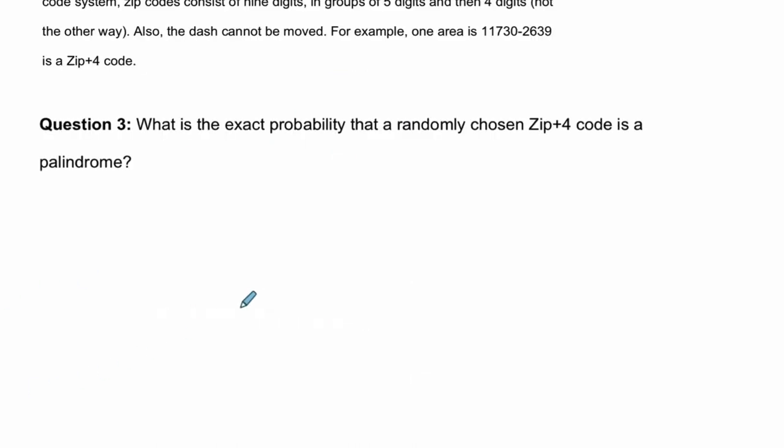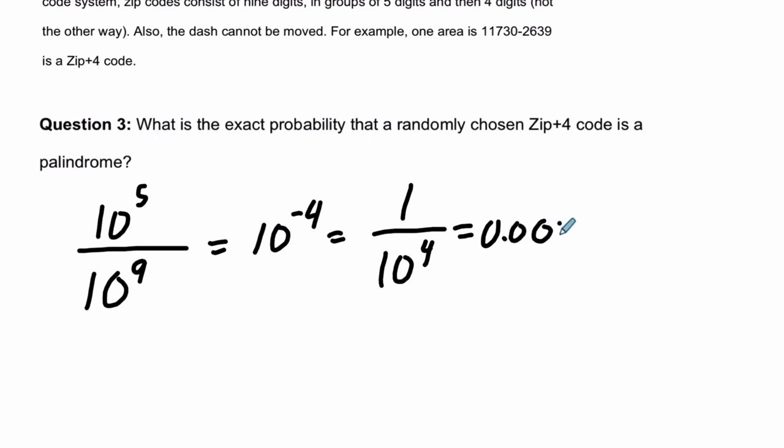We have one more part. Here it says, what is the exact probability that a randomly chosen zip plus four code is a palindrome? Well, probability, you're looking for all the ways the thing could happen out of all the possibilities. So all the ways we can get a palindrome, we just found that as ten to the fifth. Out of all the possibilities, we just found that as well as ten to the ninth. And here, you might remember with these exponents, you subtract. So you can get ten to the negative fourth, which is the same as one divided by ten to the fourth. And I'm thinking that's 0.0001. And all I thought there was, if I take one and divide it by ten to the fourth four times, I divide once, twice, three, four times. And that's our probability. All right. I hope this helped.